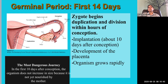Believe it or not, most zygotes will not make it. Only about 40 percent of them will actually achieve implantation. So most will not even make it, and you wouldn't even know you could have been pregnant. Right from the beginning, the odds are against being born.